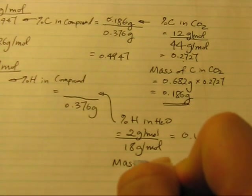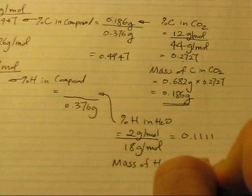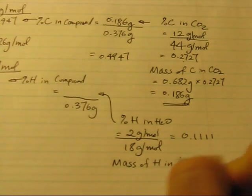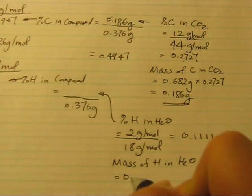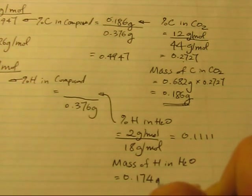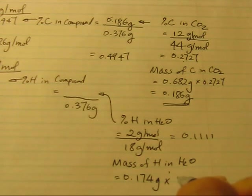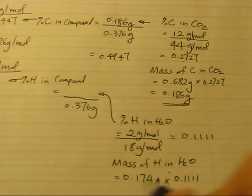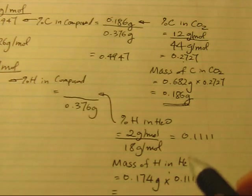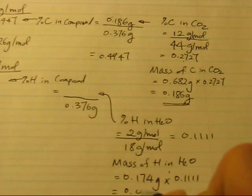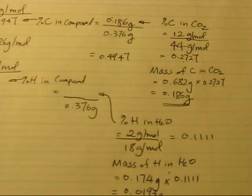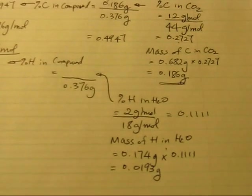And then we calculate the mass of hydrogen in water. So based on the information given, we have 0.174 grams of water. And then we multiply by 0.1111 or 11.11%. That is going to give you 0.0193 grams of hydrogen.